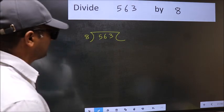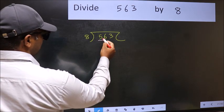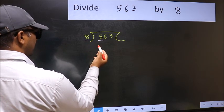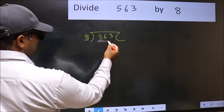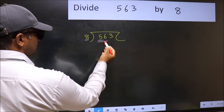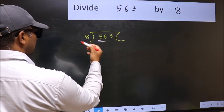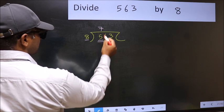Next, here we have 5 and here 8. 5 is smaller than 8, so we should take two numbers: 56. When do we get 56 in the 8 table? 8 times 7 is 56.